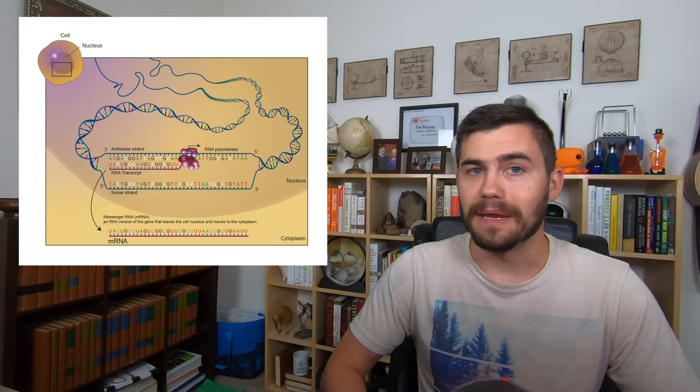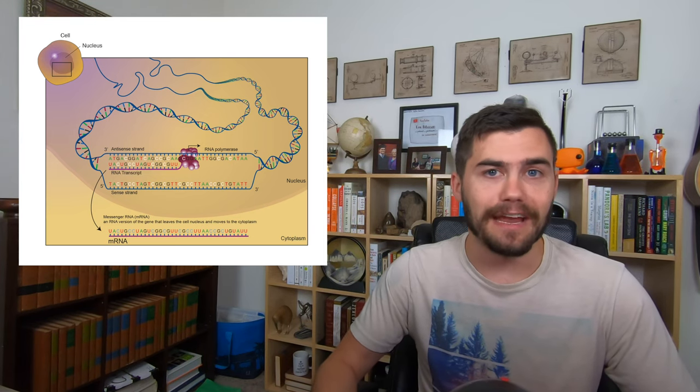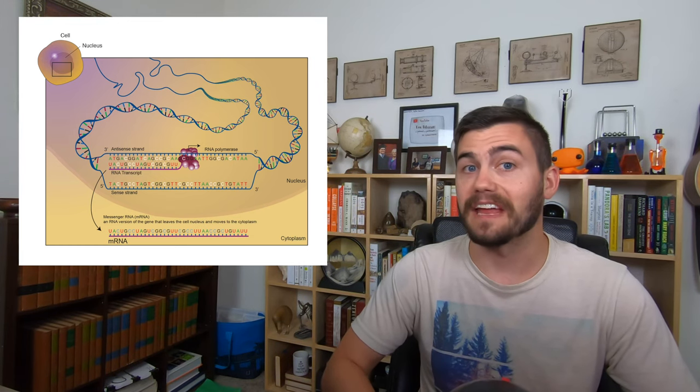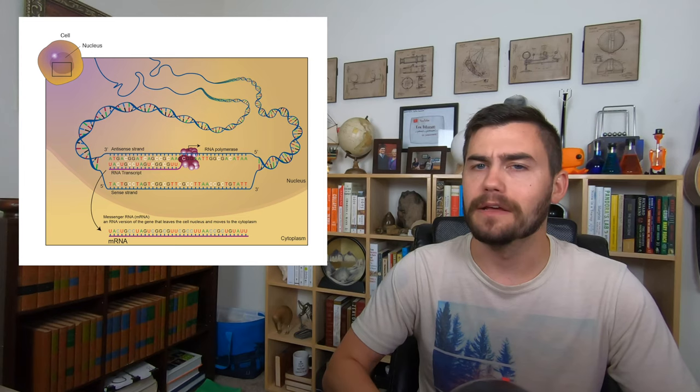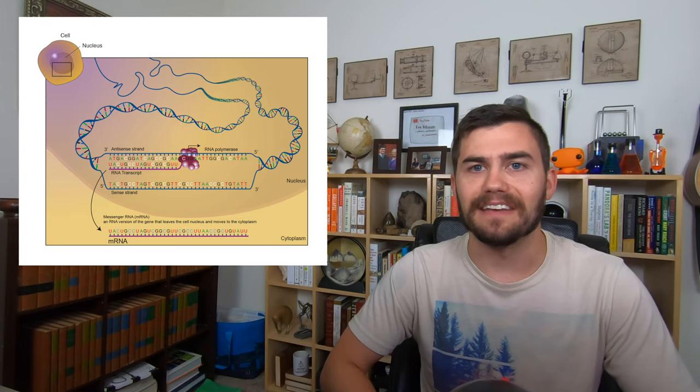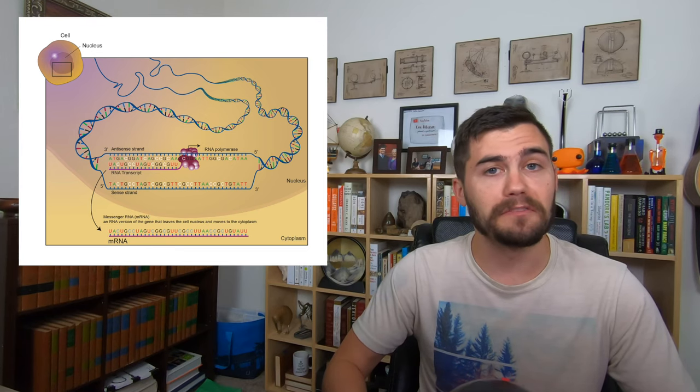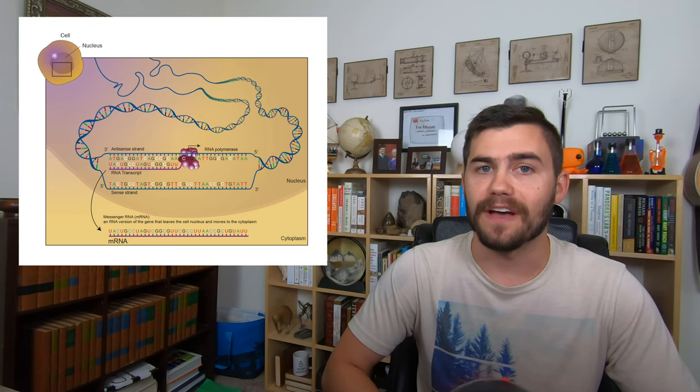When it sees a thymine, it adds an adenine, just like what happens during DNA replication. When it sees a cytosine, it adds a guanine. When it sees a guanine, it adds a cytosine. But when it sees an adenine, the enzyme attaches a uracil nucleotide. Because remember, RNA has no thymine. This messenger RNA ribbon is produced inside of the nucleus, but then it leaves. Messenger RNA contains the coded instructions that will be used to make proteins.